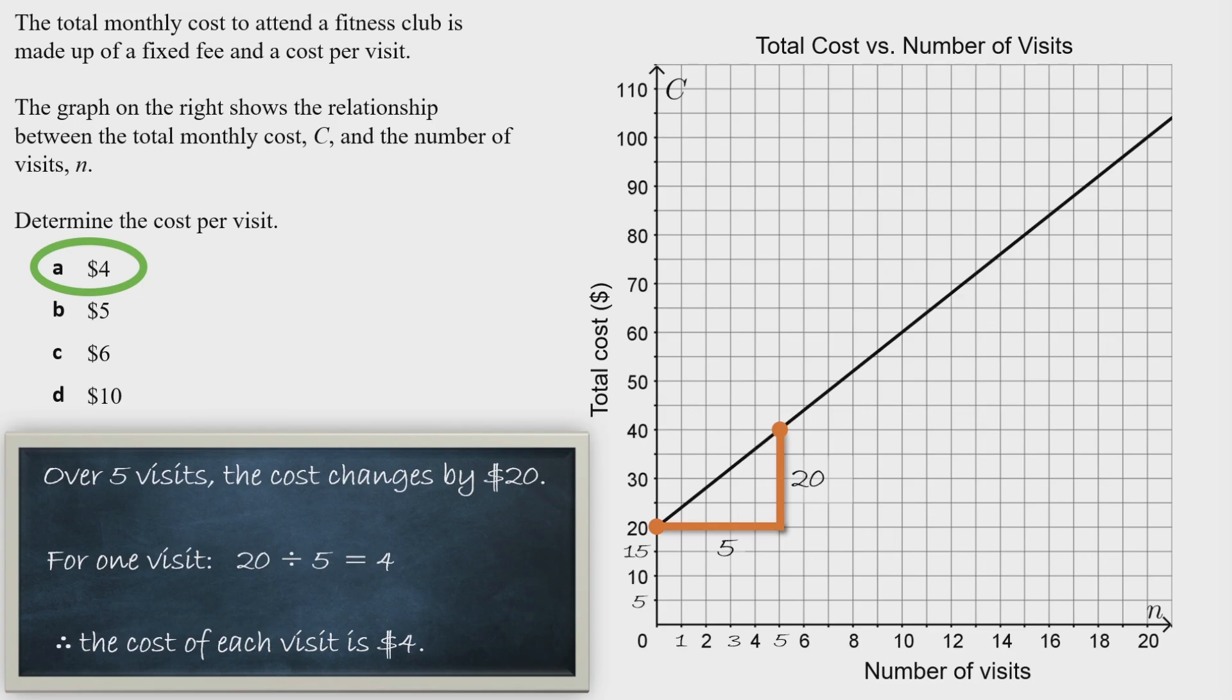Before we wrap up, let's discuss a common mistake. Sometimes students ask why they can't just use the point at $100 and 20 visits and do 100 ÷ 20 = $5 per visit. We can't do that because over these 20 visits, the cost did not increase by $100. The cost started at 20, not zero, so it only went up by 80. This approach won't work using just a single point.